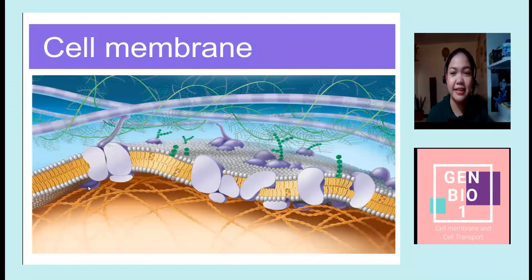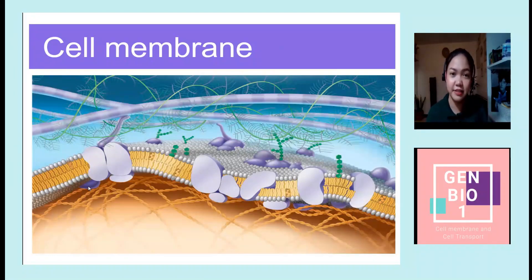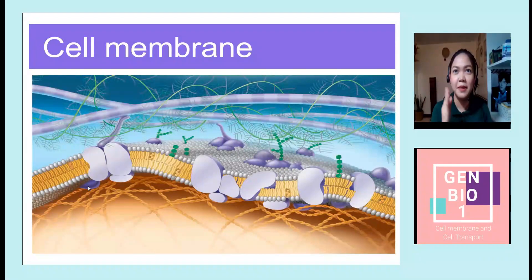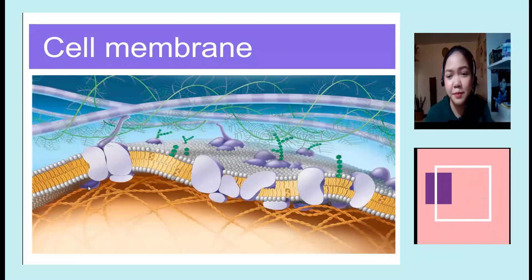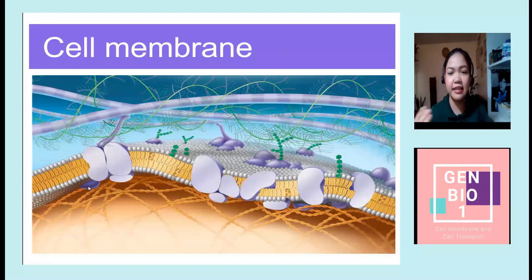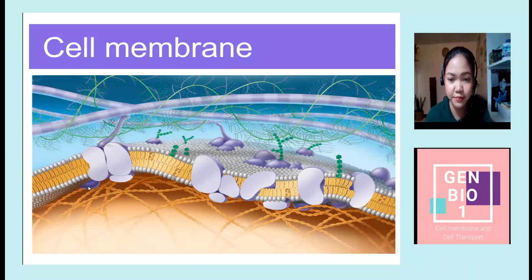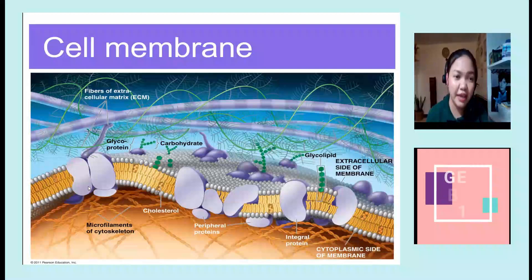The cell membrane is basically the edge of life, or the boundary that separates the living cell from its surroundings. It controls what goes in and out of the cell. We already learned about this — we got an overview. The cell membrane is said to be semi-permeable, meaning it allows some substances to cross it more easily than others, while others cannot enter at all.